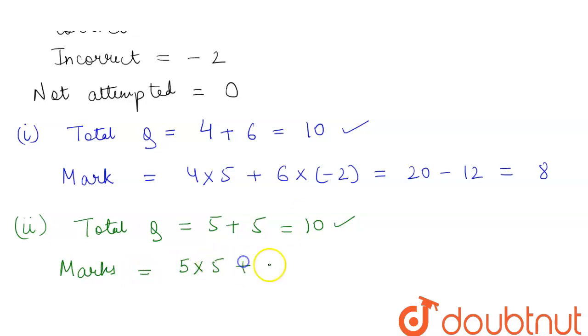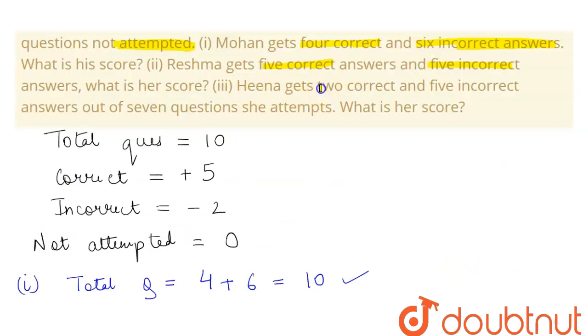So her total number of marks will be equal to 5 × 5 (the marks for correct) plus 5 × (-2) (the marks for incorrect). So this will be equal to 25 minus 10, that is equal to 15.